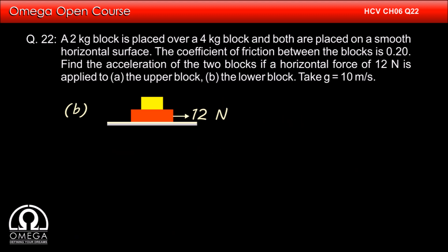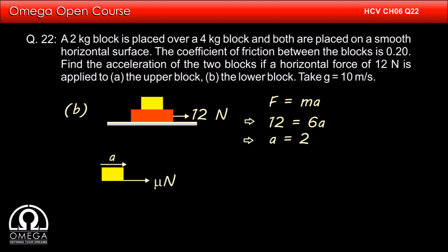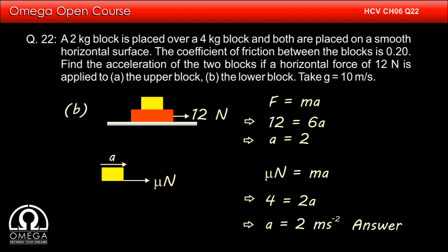In part B of the question, the force is being applied to the lower block. As we calculated in part A, the common acceleration of the blocks if they move together will be 2 m/s². Now the maximum acceleration the upper block can have is mu times normal divided by its mass, that is 4 N divided by 2 kg = 2 m/s². Since the maximum acceleration the block can have is not less than the common acceleration, both blocks will move together and the acceleration will be 2 m/s². This is the answer to part B.